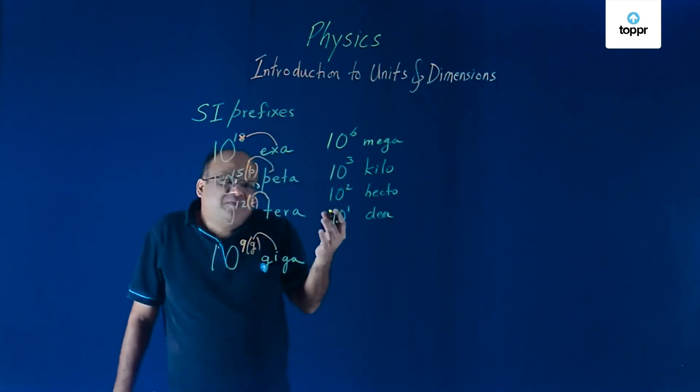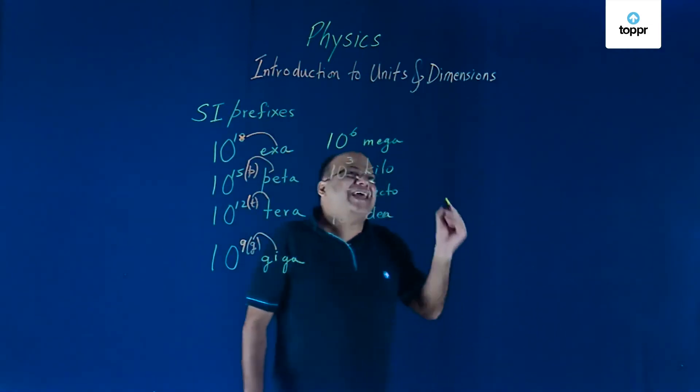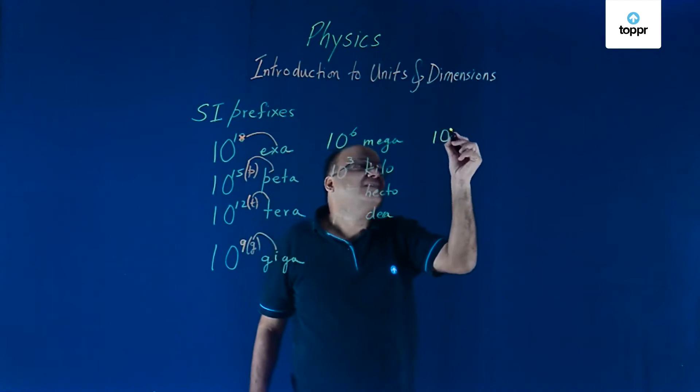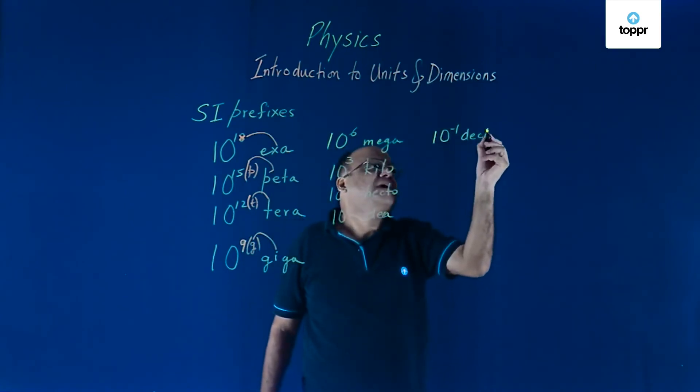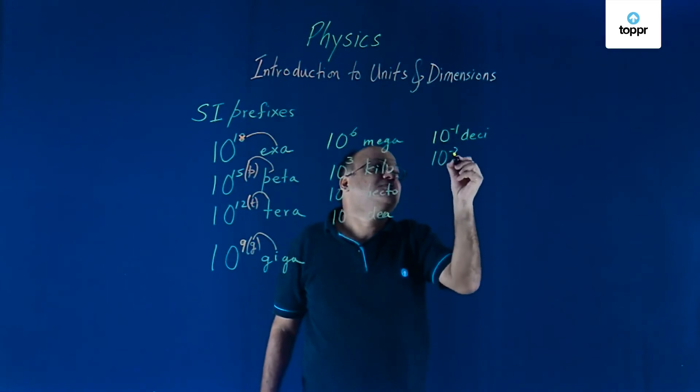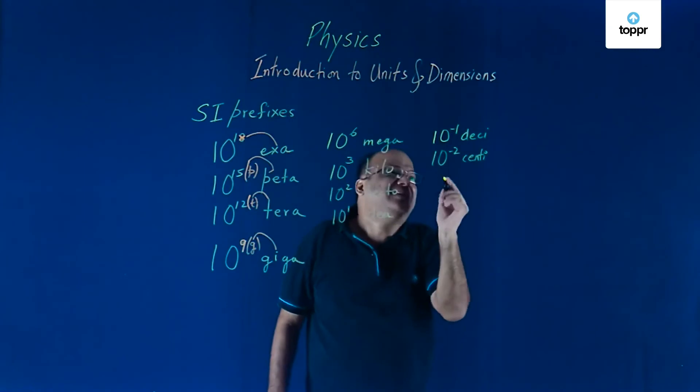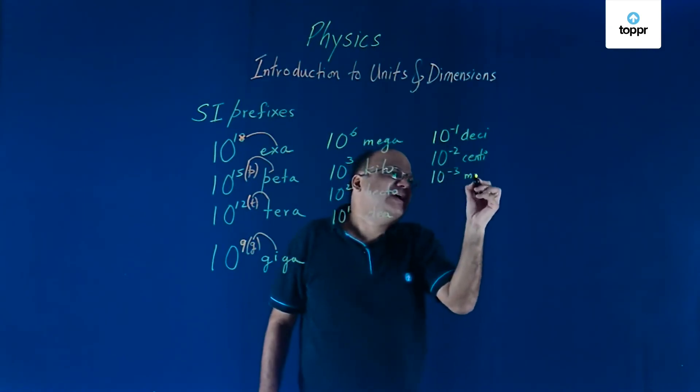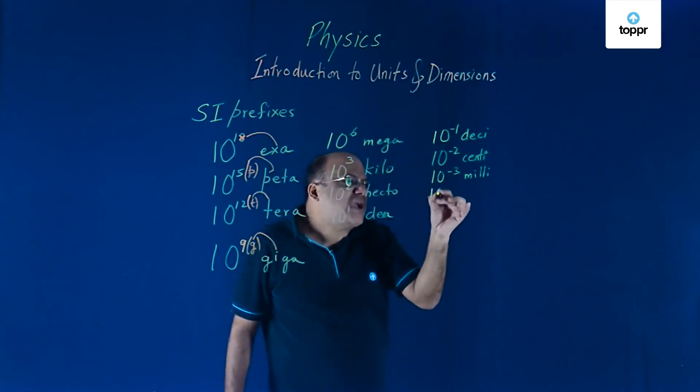10 to the power minus 1. Now you go towards the smaller size. 10 to the power minus 1 is DESI. Minus 2, centi, centimetre you got in your scale. Minus 3, milli. Millimetre also got in your scale. Then you go to micro.